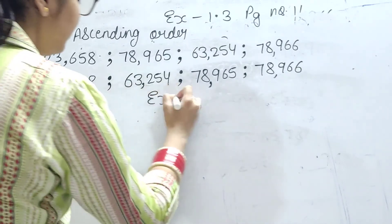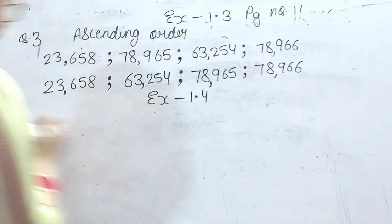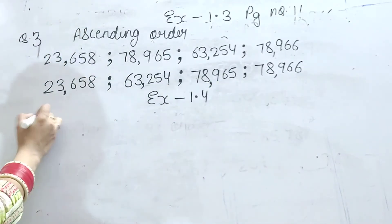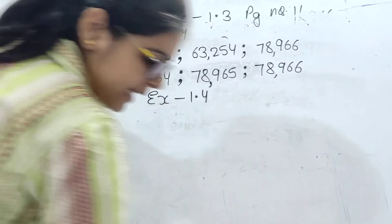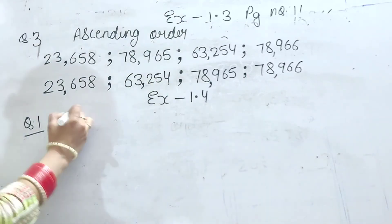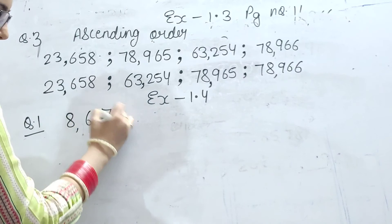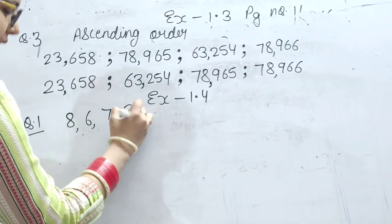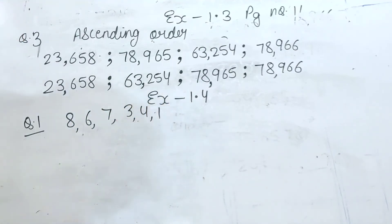Ab hum Exercise 1.4 ka question number one karenge, jis mein hume greatest and smallest number banana hai. Aur digits hain hamare paas: 8, 6, 7, 3, 4, 1.